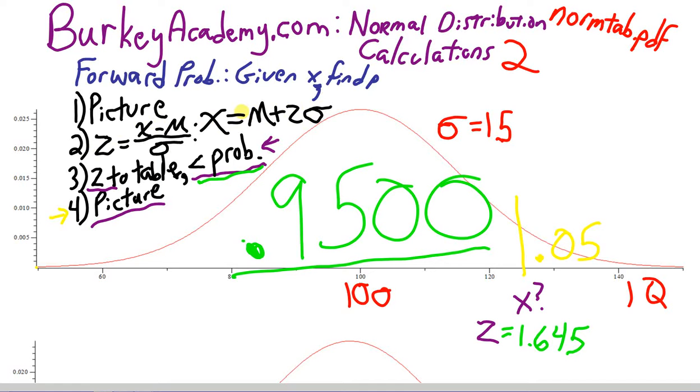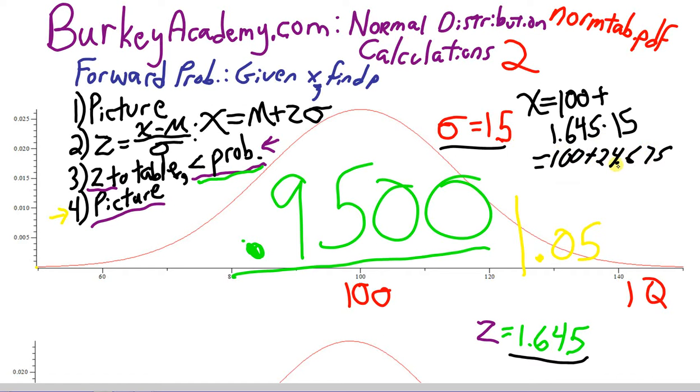Now, let's use that to get this IQ, and let's go back to the picture and make sure that it makes sense. So, x equals the mean 100 plus z, 1.645 times standard deviation is 15. And let's see what we get here. So, 1.645 times 15 equals 24.675. So, we get 100 plus 24.675. And so, our IQ that we're looking for here is 124.675. A number a little bit bigger than 120, just like we anticipated it would be.